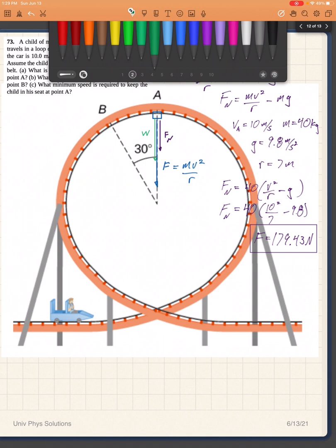Now for part B we have a similar question, but the position of the child is no longer right overhead. It's 30 degrees off. And so we have to do a little bit more geometry, but beyond that it's the same problem.